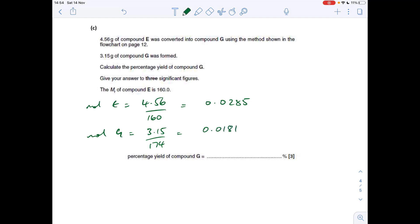And then obviously the ratio is 1 to 1. So we would expect that many moles of G to form, but we've only got that many moles. So percentage yield, we just go that over that times 100. And to three significant figures, that's 63.5%.